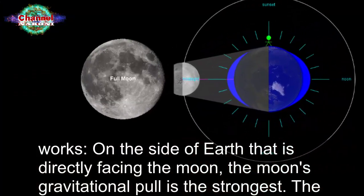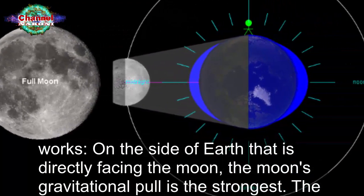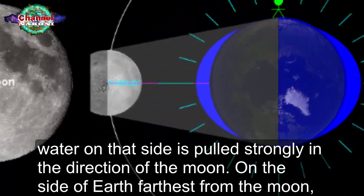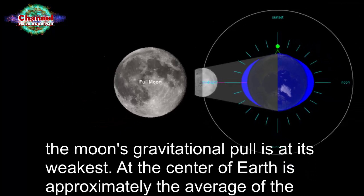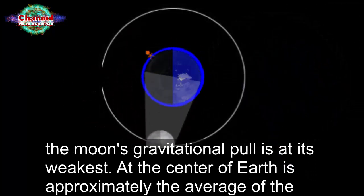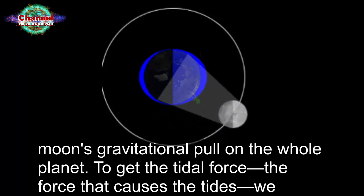Here's how it works. On the side of earth that is directly facing the moon, the moon's gravitational pull is the strongest. The water on that side is pulled strongly in the direction of the moon. On the side of earth farthest from the moon, the moon's gravitational pull is at its weakest. At the center of earth is approximately the average of the moon's gravitational pull on the whole planet.